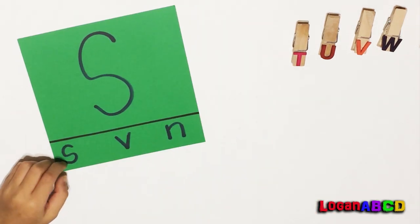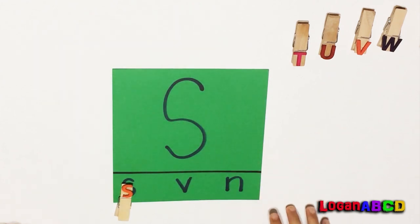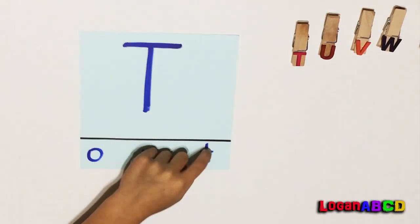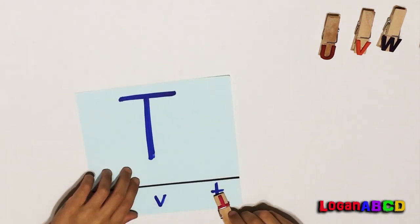S, lowercase is S. S, S is for snake. T, lowercase is T. T, T for towel.